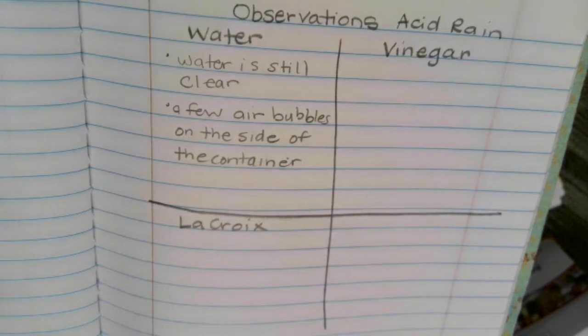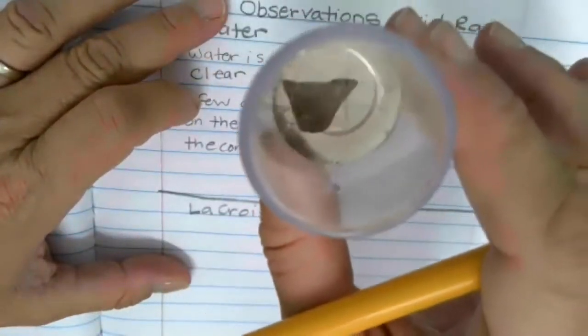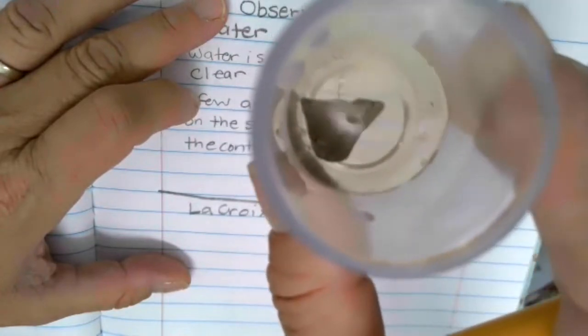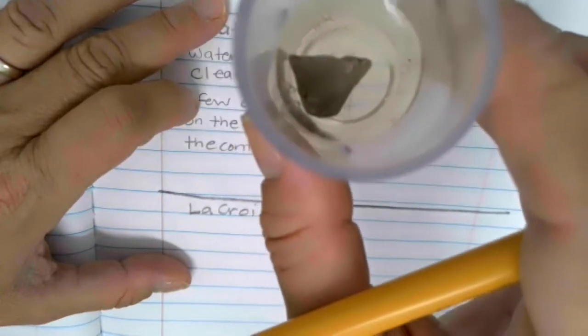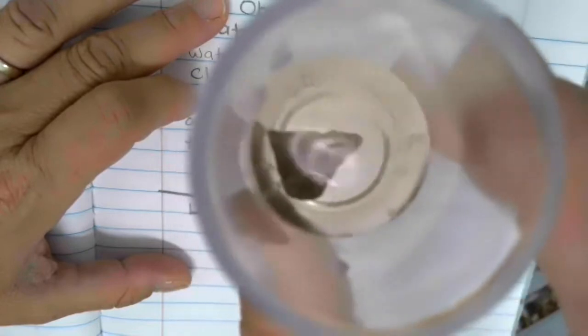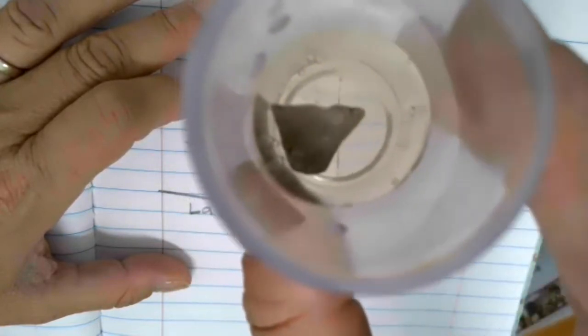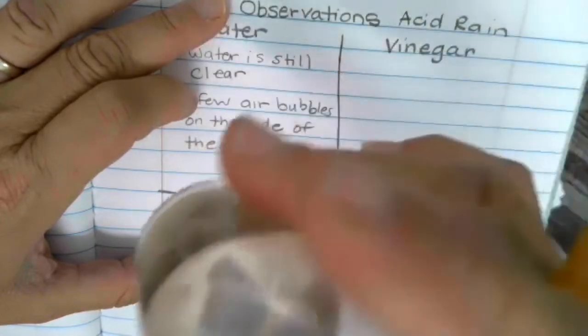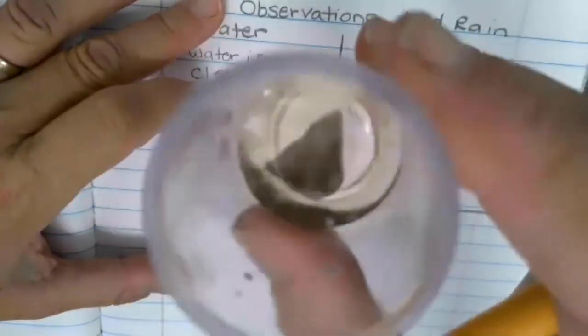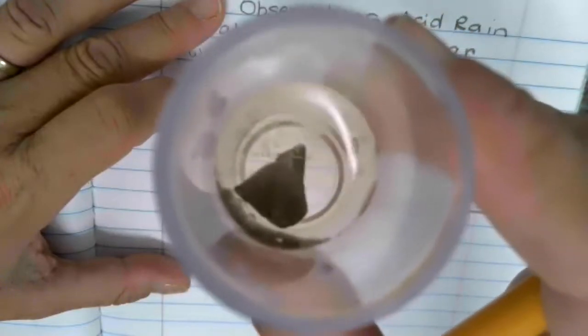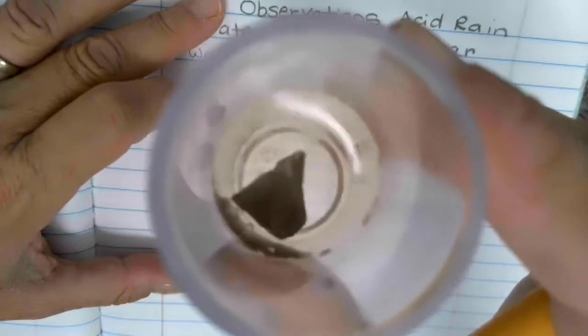So the next one we're going to observe will be the LaCroix. Now this one if you look carefully do you see how the LaCroix, the water is more like it's turned kind of yellow. It's not clear anymore. It's not clear like water so it's changed colors and again we do have air bubbles. So something has happened and we've pulled out something from the rock and we do have air bubbles again.